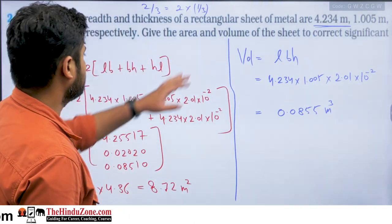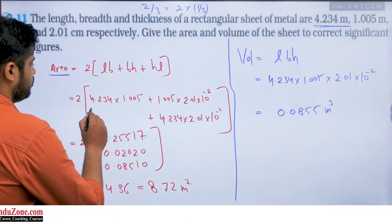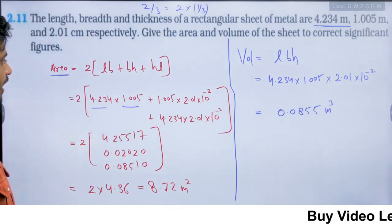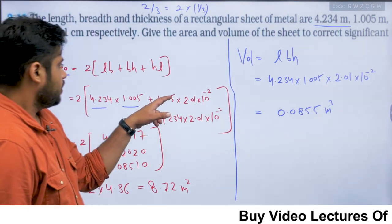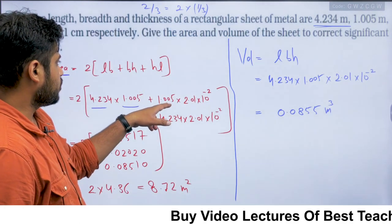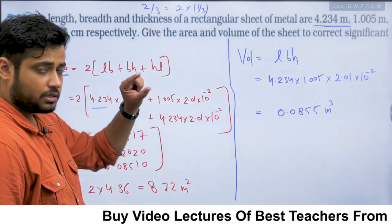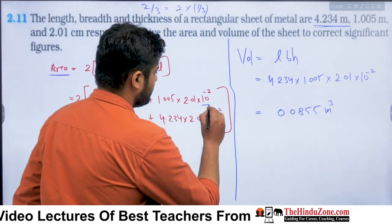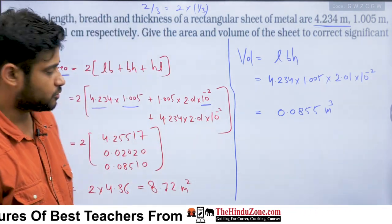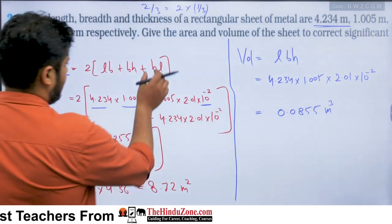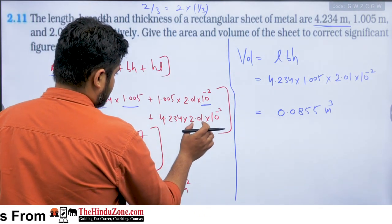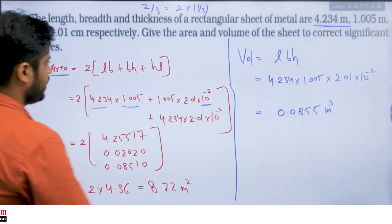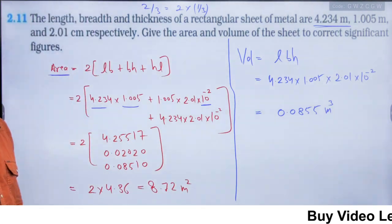The length is 4.234 m and breadth is 1.005 m. The breadth is 1.005 m and the thickness (height) is 2.01 cm, which we convert to meters as 2.01 × 10⁻² m. Then H × L: thickness is 2.01 × 10⁻² m and length is 4.234 m.